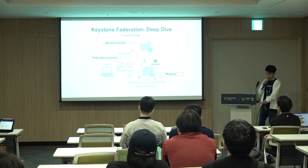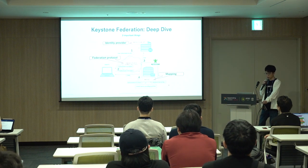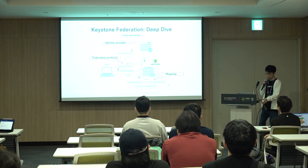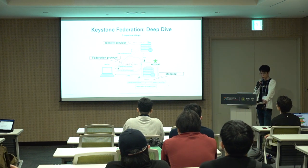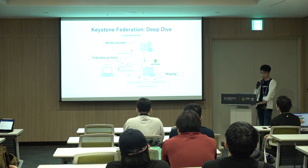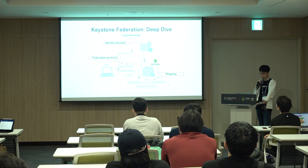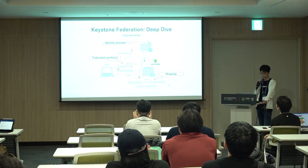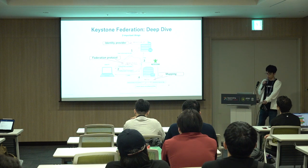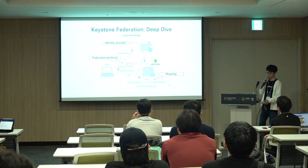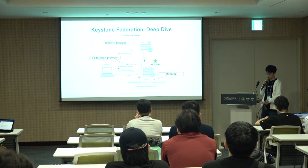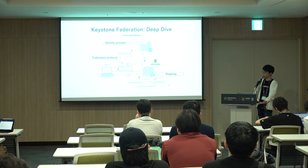To understand Keystone federation, we need to know three important things. The first is the identity provider. As mentioned, the identity provider handles user authentication. Most organizations already have an identity provider, and we use ours with Keystone federation. The second is the federation protocol. Keystone needs to receive authentication information from the identity provider, which is achieved using federation protocols such as SAML and OIDC. The third is mapping — the rules that convert identity provider data into Keystone's internal data.